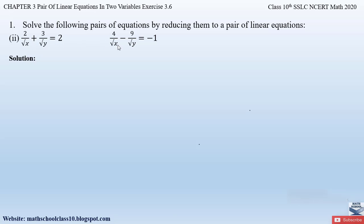We need to reduce these given equations to a pair of linear equations. The standard form of a pair of linear equations is: a₁x + b₁y + c₁ = 0 and a₂x + b₂y + c₂ = 0, where the variables x and y are in the numerator. So we have to bring the two given equations into the general form of a linear equation first.